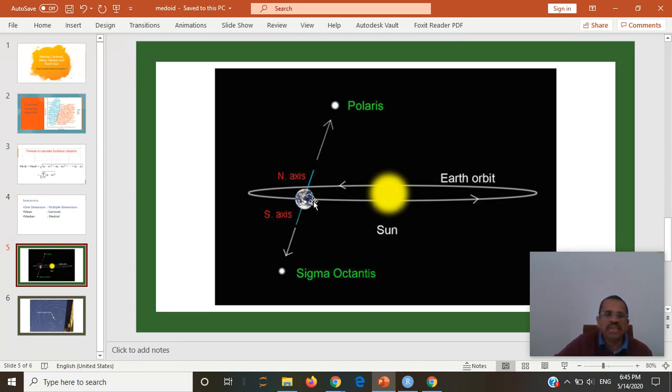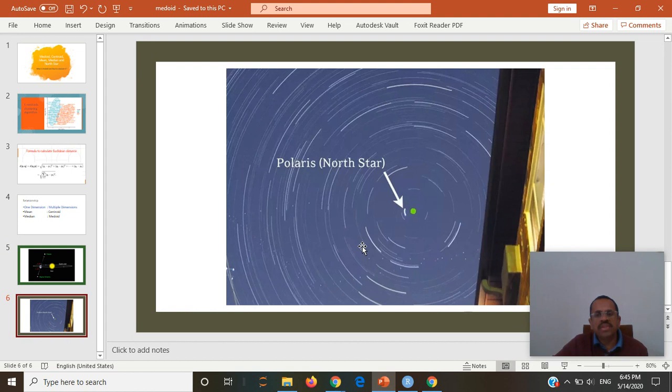This is Sun, this is Earth. It rotates on the axis, and if we look in the sky from North Hemisphere, we see this Polaris or North Star. Now this is a photograph created by keeping the camera shutter open for a few hours to get the path of every star. And we can see that as Earth rotates, the star moves in a circular direction.